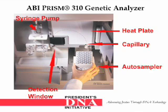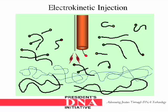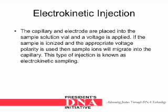For an electrokinetic injection, a voltage is applied to the sample, and any charged particles will migrate into the capillary. The capillary and electrode are placed into the sample solution vial, and a voltage is applied. If the sample is ionized and the appropriate voltage polarity is used, then sample ions will migrate into the capillary. This type of injection is known as electrokinetic sampling.